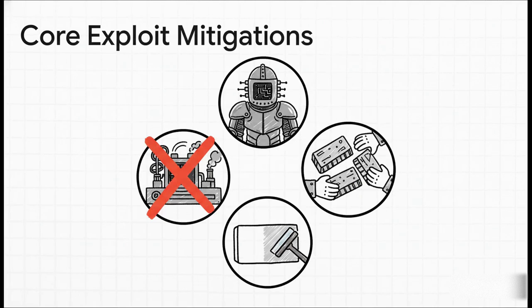GrapheneOS also implements a whole suite of deep, systemic exploit mitigations that go way beyond standard Android. We're talking about a hardened C library and kernel to fight memory corruption. Address space layout randomization is significantly enhanced. The system proactively zeros out memory after it's been used to prevent data leakage. And crucially, just-in-time compilation — a common vector for exploits — is completely disabled. It's replaced with full ahead-of-time compilation, which eliminates an entire class of vulnerabilities right off the bat.